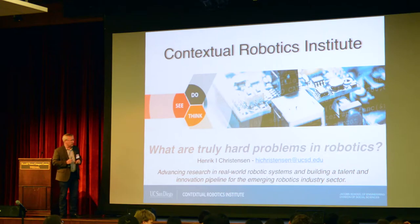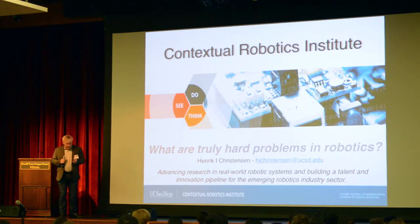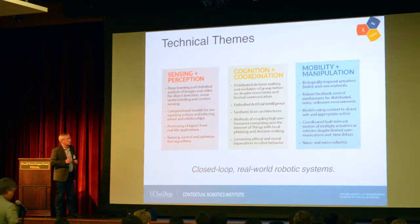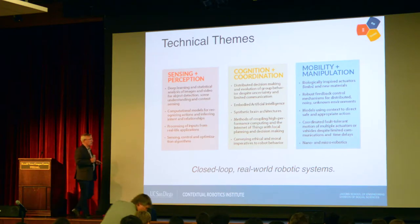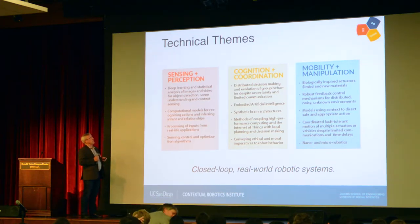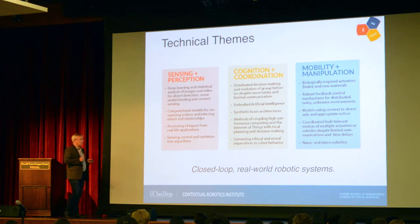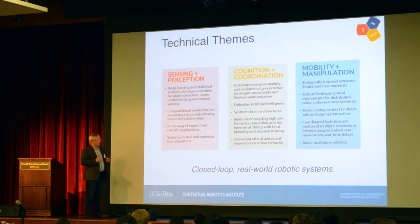I wanted to give a little bit about what we're doing at UCSD, and then talk about what are actually hard problems in robotics. I came up here to run the new Institute for Contextual Robotics, trying to really understand what we can do in terms of solving real-world robotics systems — how we can build real systems and deploy them so that we're solving not just academic problems, but problems that people really care about.